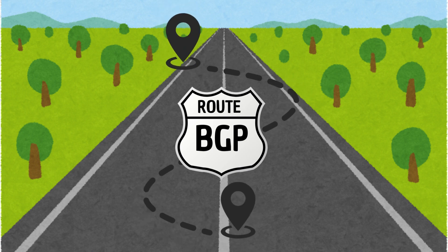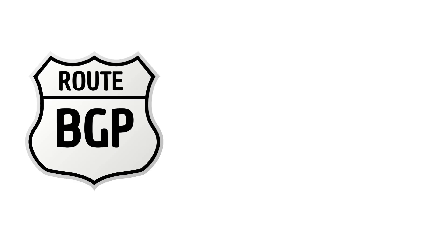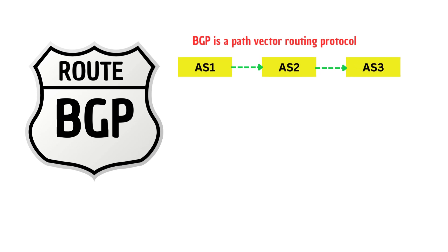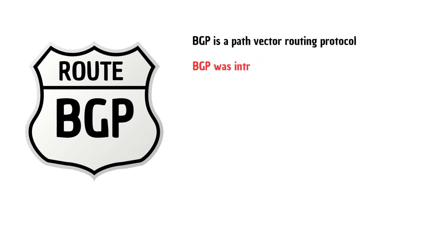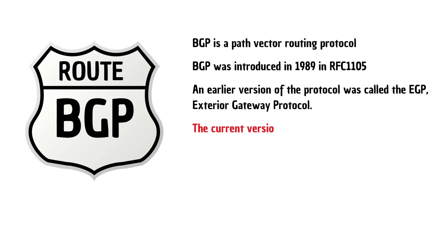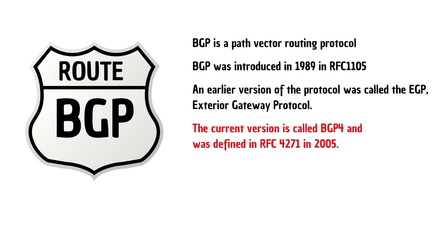Here are some basic facts about BGP. BGP is a path vector routing protocol that takes into account the entire path — a sequence of autonomous systems — to a destination network. BGP was introduced in 1989 in RFC 1105. An earlier version of the protocol was called EGP, Exterior Gateway Protocol. The current version is called BGP4 and was defined in RFC 4271 in 2005.